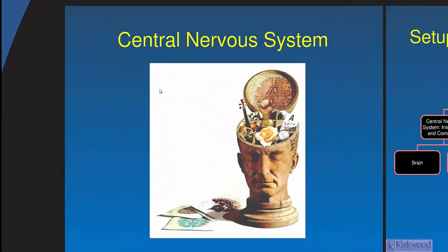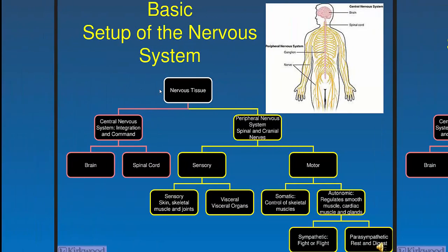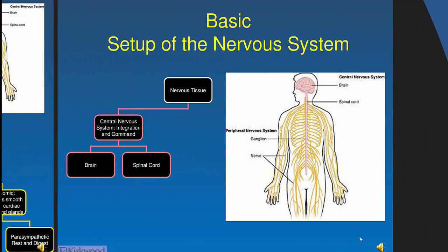The basic setup of the nervous system: we divide nervous tissue into the central nervous system — brain and spinal cord — and then sensory and motor systems. The sensory system covers skin, skeletal muscles, and joints. Visceral organ sensation is kept separate because it's less exact — pain in your heart may be felt in the arm, and kidney stones may feel like back pain. The motor system includes somatic (skeletal muscles) and the autonomic nervous system. Sympathetic gives you energy in fight-or-flight; parasympathetic is rest and digest.